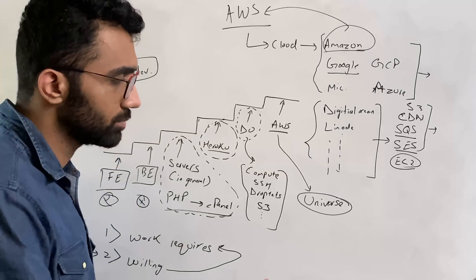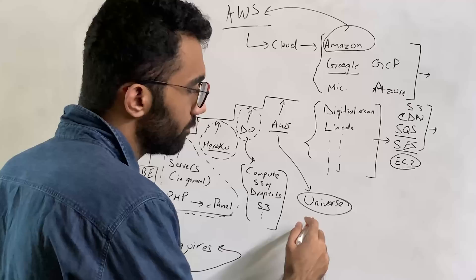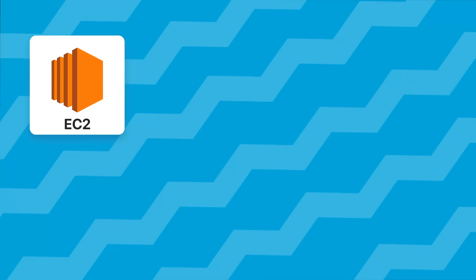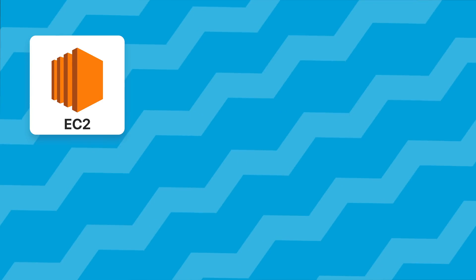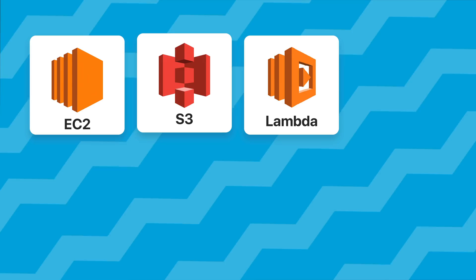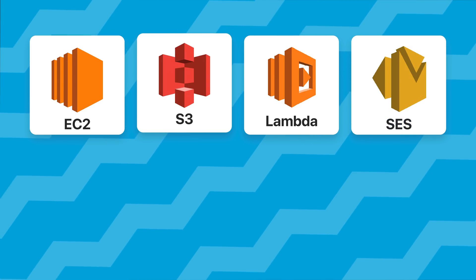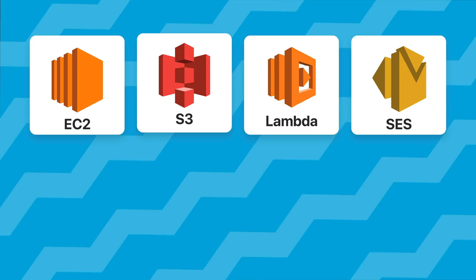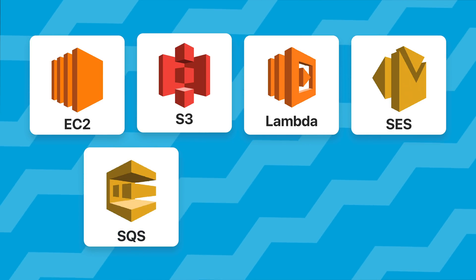stick to a few which are very commonly used: EC2 for example elastic compute, S3 simple storage service, lambdas which is serverless compute, SES for sending emails programmatically very cheap, SQS for maintaining queue structures reading and writing from them at scale